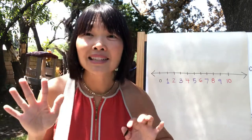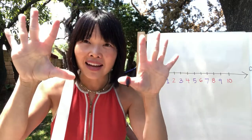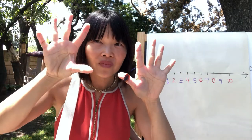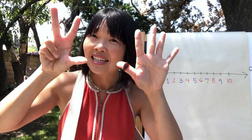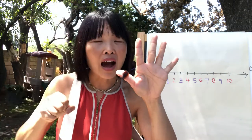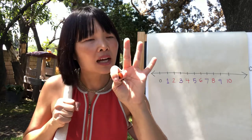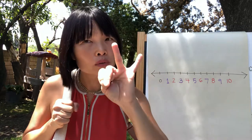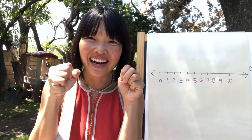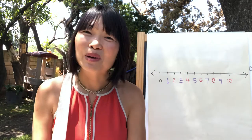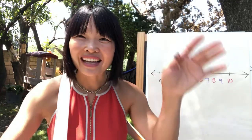Or you could count down with your fingers. Start with 10, and if you're taking away one: nine, eight, seven, six, five, four, three, two, one, zero. All right, boys and girls, that's it for now. Goodbye.